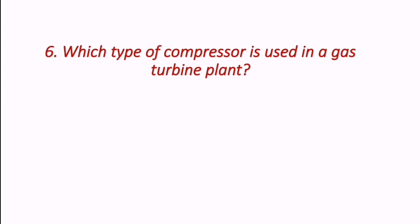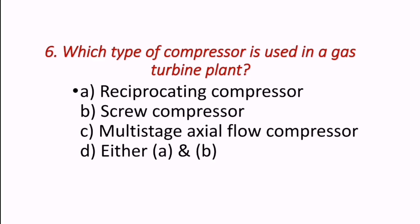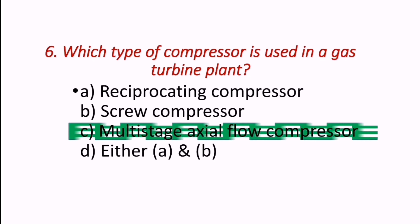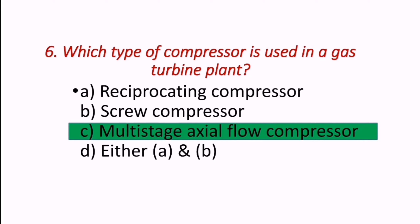Question: Which type of compressor is used in a gas turbine plant? The answer is a multi-stage axial flow compressor. The axial flow compressor is very important, and specifically the multi-stage type.